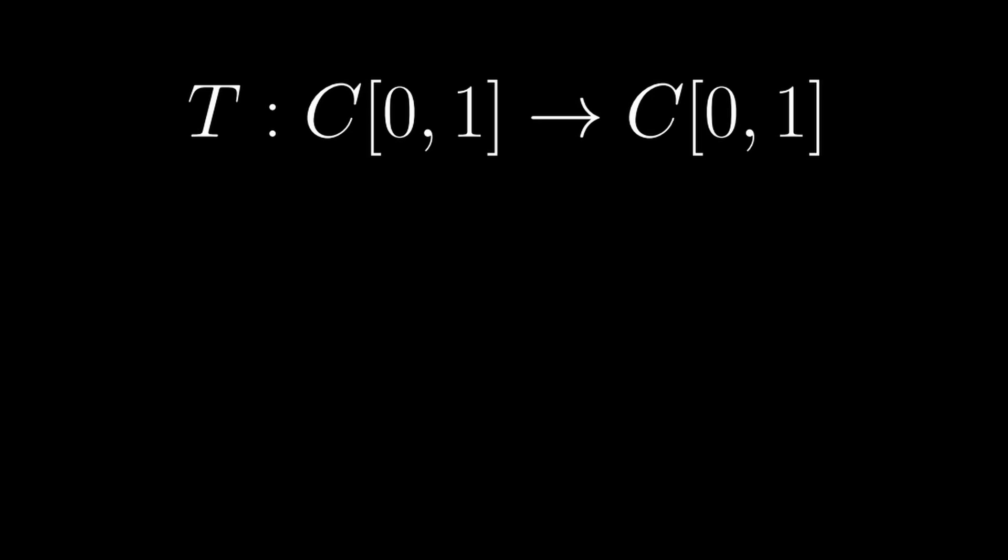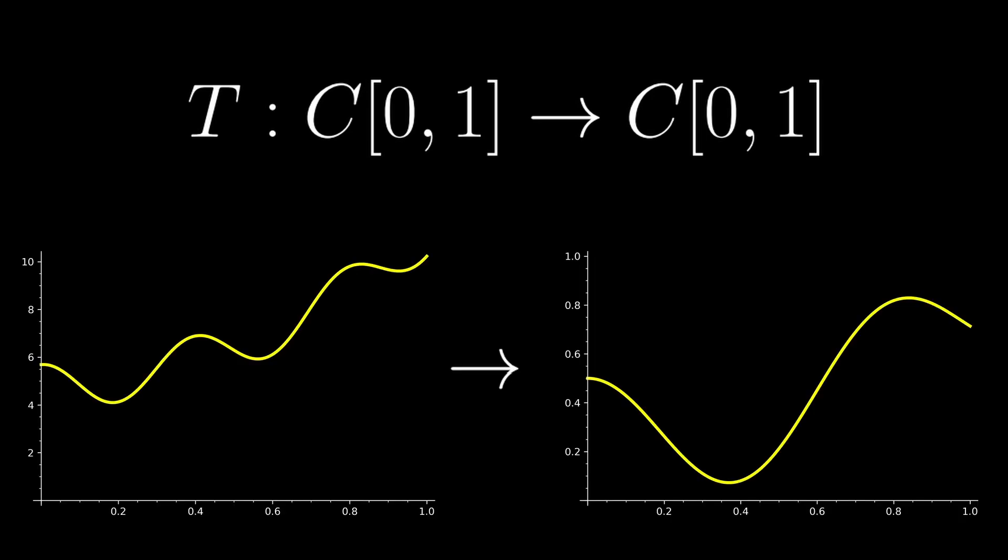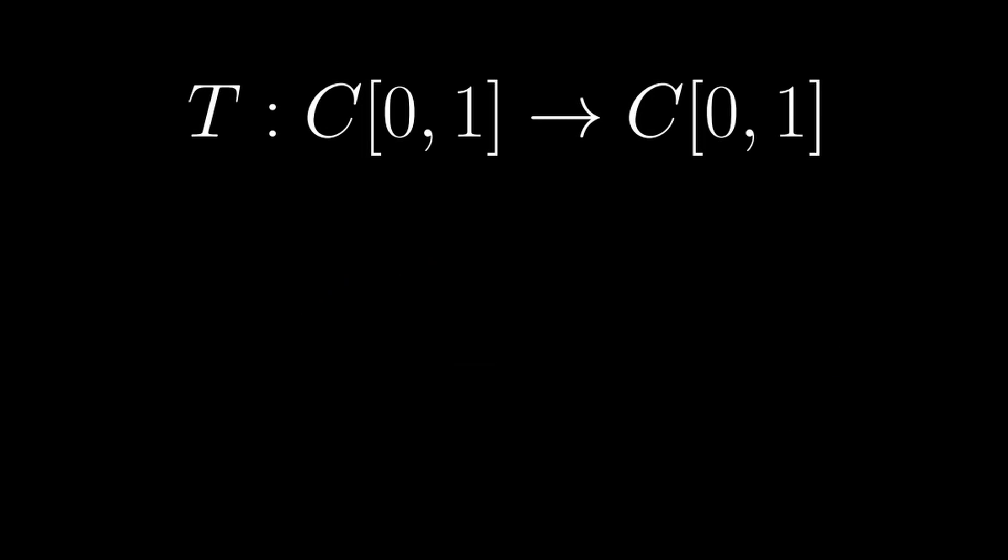Let's define a transformation T on the space of continuous functions. Like any transformation, T is going to take in a point and give back a point. But remember, in this infinite dimensional space, our points are functions. So, T is going to take a function as input and return a function as output. Okay, define T by this formula.